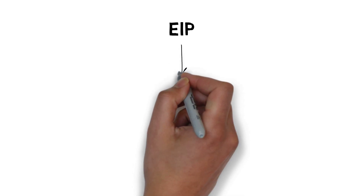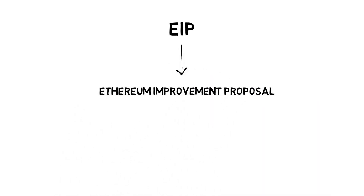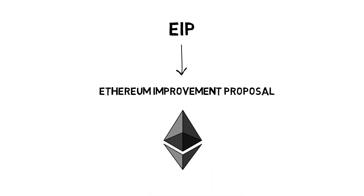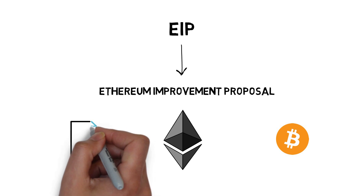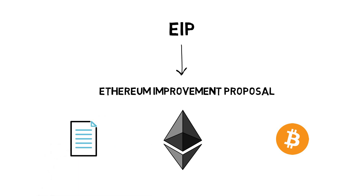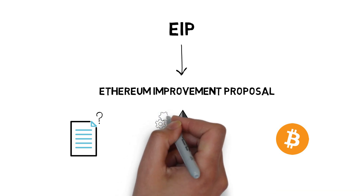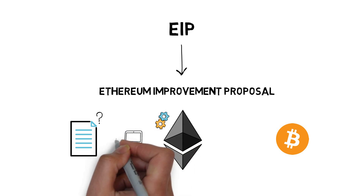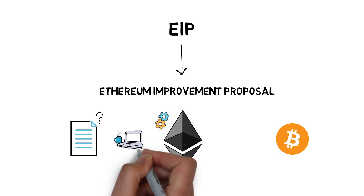Let's start with what EIPs actually are. EIP stands for Ethereum Improvement Proposal and it's a common way of requesting changes to the Ethereum network, inspired by Bitcoin Improvement Proposals. An EIP is a design document covering technical specifications of the proposed change and the rationale behind it. The majority of EIPs focus on improving technical details of Ethereum and are not widely discussed outside of the core Ethereum developers community.